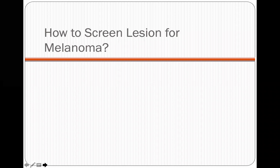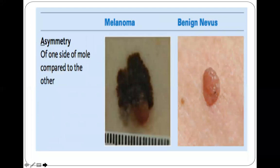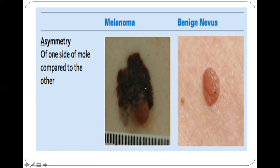To screen your patient for melanoma, take note of the ABCDEFG criteria. Compared to a benign nevus, a melanoma shows asymmetry — one side of the mole looks different from the other, whereas a benign nevus has uniform color and texture. The border of a melanoma is irregular, while a benign nevus has a smooth, less irregular border.